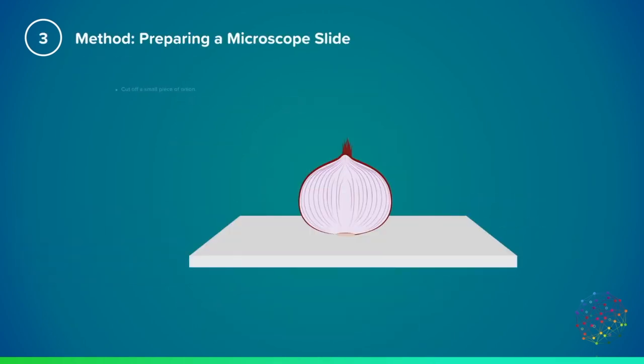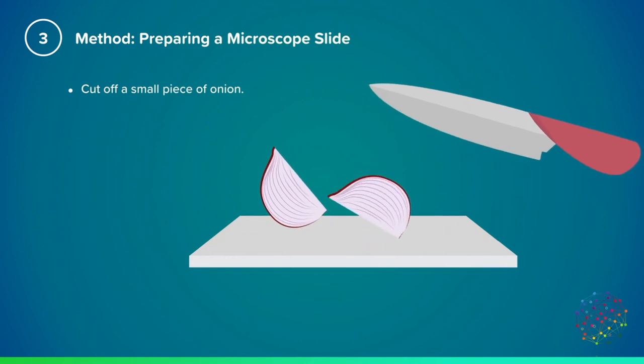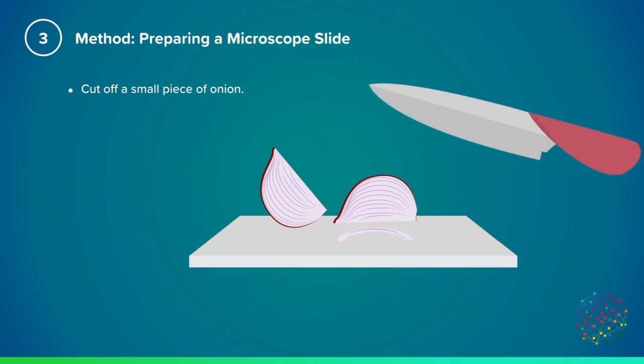To prepare a microscope slide, you first need to take an onion, place it on a white tile and use a knife to cut it into sections. You will only need a small piece of the onion, no wider than the microscope slide itself.